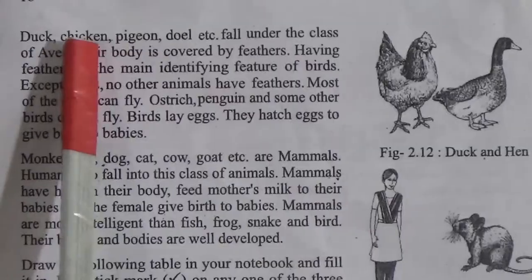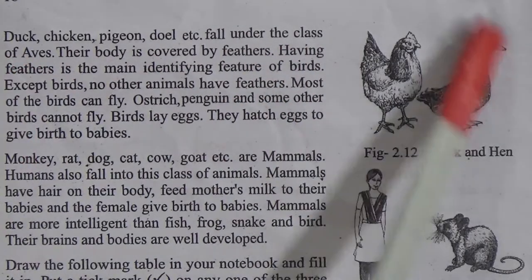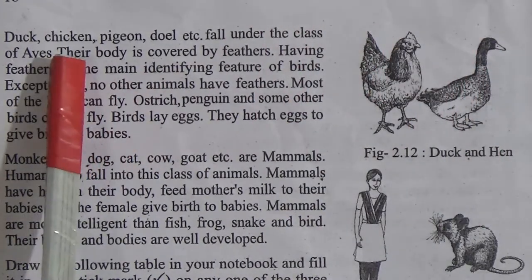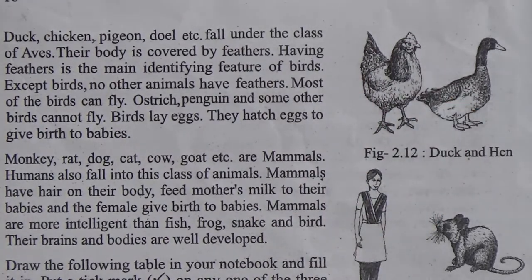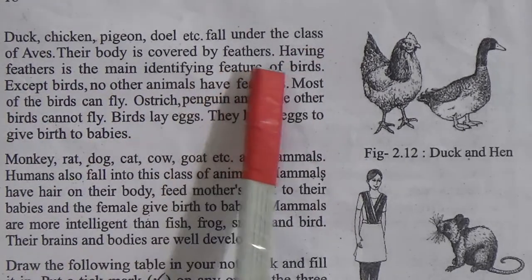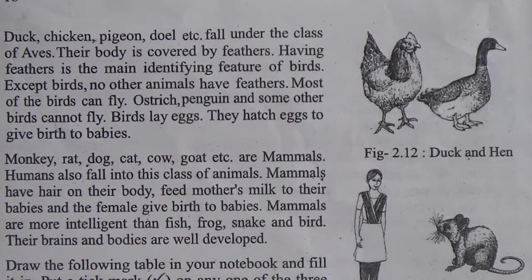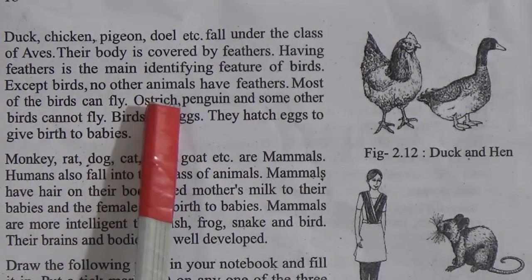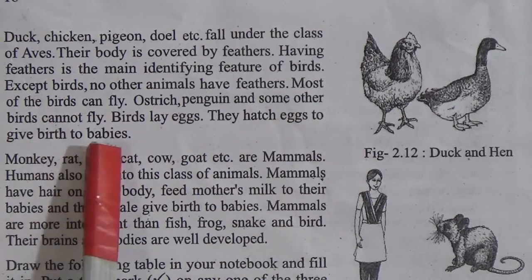Duck, chicken, pigeon, doel, etc. fall under the class Aves — they are birds. Their body is covered by feathers, which is the main identifying feature of birds. No other animals have feathers except birds. Most birds can fly, but ostriches, penguins and some others cannot fly. Birds hatch eggs to give birth to their babies.